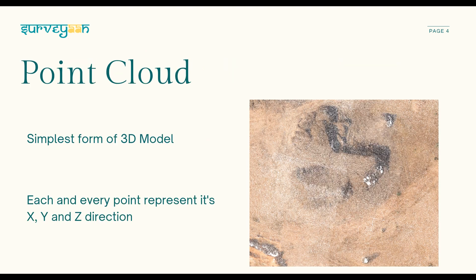Point cloud is the simplest form of 3D model. It is a set of data points in space. The points may represent a 3D shape or an object. Each and every point represents its X, Y, and Z coordinates. Since there are millions and trillions of points, it is called a point cloud.